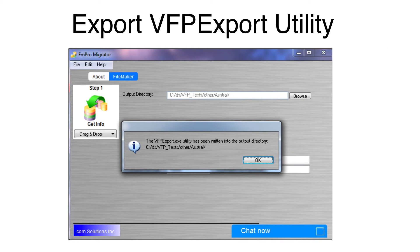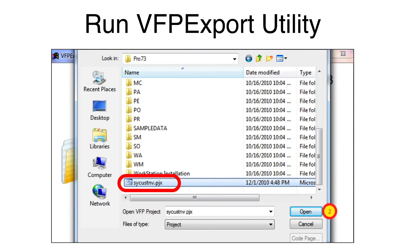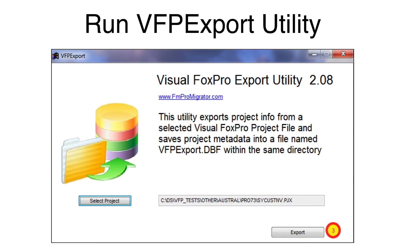Once the file has been written to the output directory, a dialog will be displayed showing its location. Open the VFP export utility. Click the Select Project button, then select the PJX file for the Visual Fox Pro project being converted. Click on the Export button and the VFP export utility will start reading the project file.